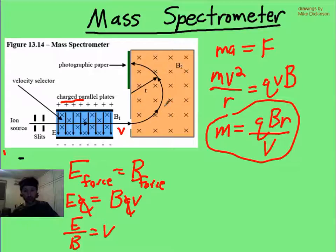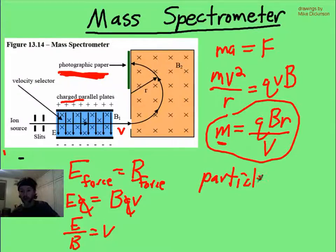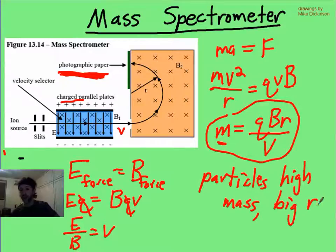And these will curve around, and they're going to hit this photographic paper. At least photographic paper, maybe, if you live in the 1960s. Probably now there's something a lot more complex. But what you want to notice is that if you have particles of high mass, then they have a bigger radius. Because these big, chunky, fat atoms can't curve around very well. And if you have low mass, then they can curve around or accelerate easily. So then you have a smaller radius.